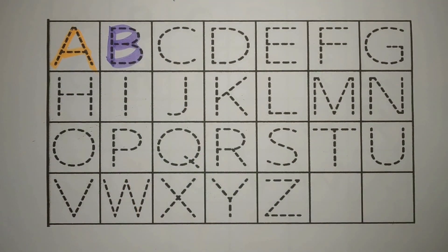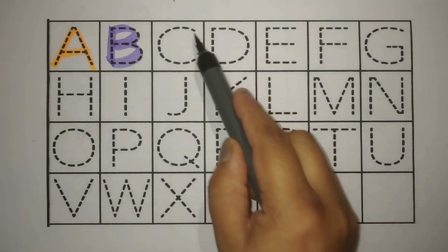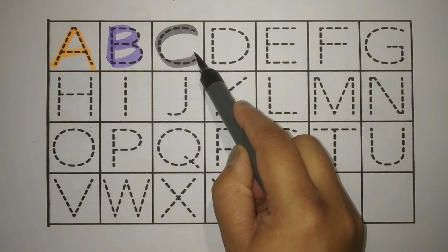Purple. B, B for Ball. Gain. Kya khailtay hain aap gain se? Gray. C, C for Carrot. Gajar.